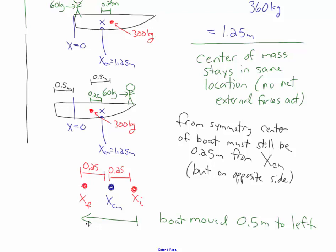That means the boat shifted 0.5 meters to the left overall. The center of the boat moved 0.25 and then an additional 0.25 to get to the final spot — so the whole boat shifted 0.5 meters to the left. The back end of the boat is now 99.5 meters from the shore, or 0.5 meters to the left of where it started.